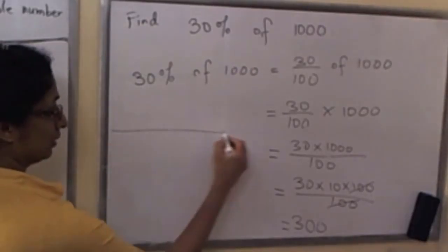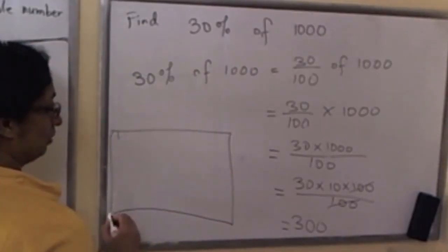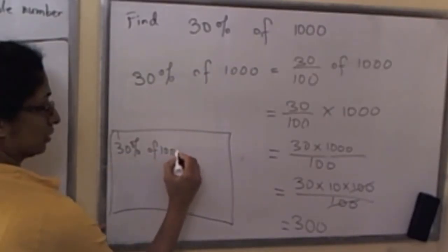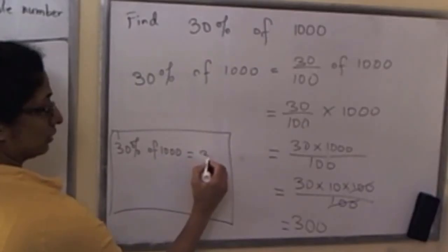So the answer is, and let's write it in here, 30% of 1000 equals 300.